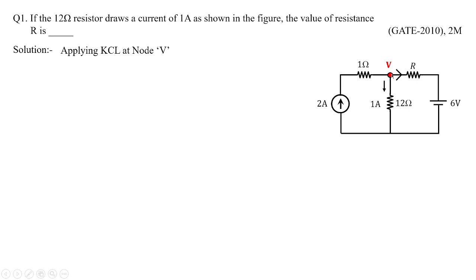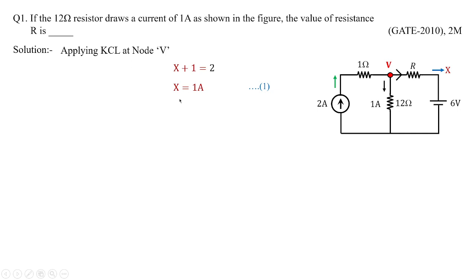Two branch currents are given: one source current of 2 amperes flowing towards voltage V, and 1 ampere leaving voltage V. The incoming current is 2 amperes, and the outgoing current through resistor R is X. Applying KCL at this node: X plus 1 equals 2 amperes, satisfying KCL. So the unknown current flowing in resistor R is 1 ampere. Let us frame this as equation 1.